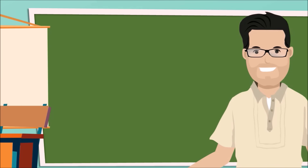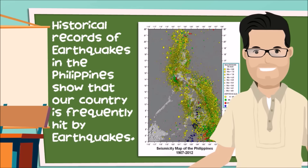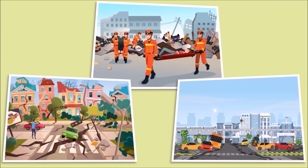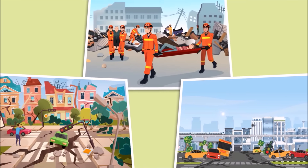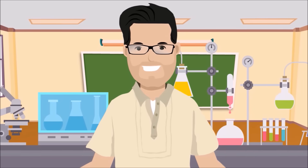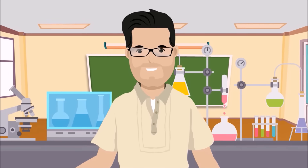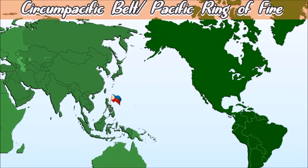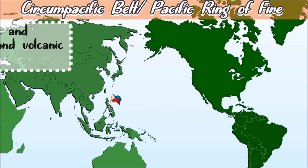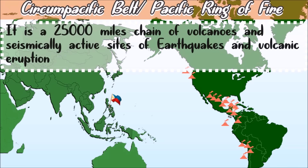Historical records of earthquakes in the Philippines from 1589 to the present show that our country is frequently hit by earthquakes. Some of these have caused a large number of casualties and damages to properties, because our country is located in an area where crustal plates are weak. This area is called the Circumpacific Belt, also known as the Pacific Ring of Fire — a roughly 25,000-mile chain of volcanoes and seismically active sites of earthquakes and volcanic eruptions.